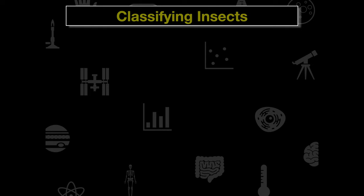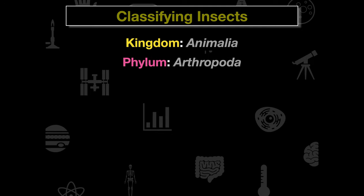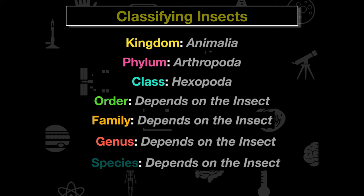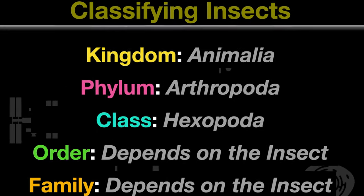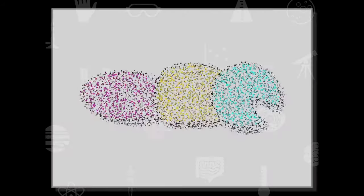We need to classify insects based on their orders. An insect belongs to kingdom Animalia, phylum Arthropoda, and class Hexapoda. The order, family, genus, and species depend on the specific insect. We'll look at those when we delve into the lanternfly, but it's important to know kingdom Animalia, phylum Arthropoda, and class Hexapoda.